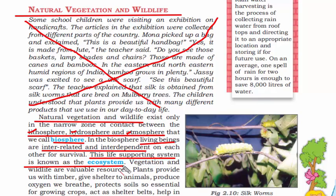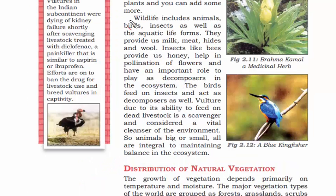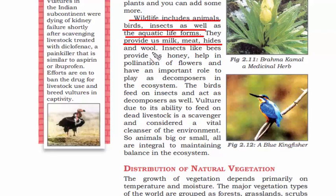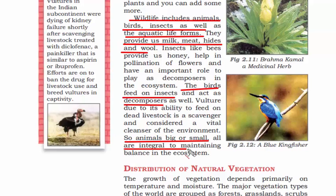The ecosystem is a biosphere in which living beings are interrelated and interdependent for survival. Wildlife includes animals, birds, insects, and aquatic life forms, which give us milk, meat, and wool. Birds eat insects, and the one that eats is called a decomposer because things decompose in their stomach. Therefore, all animals, big or small, are integral parts of maintaining the balance of the ecosystem.